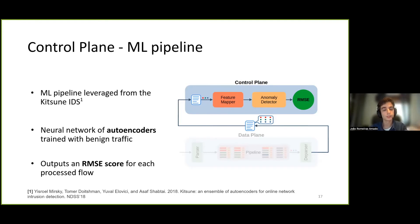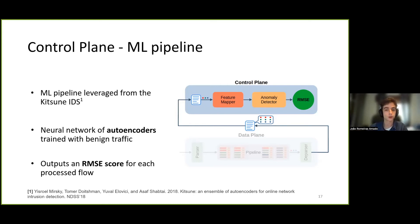The autoencoders receive the traffic measurements and output the final score for each set of measurements, the RMSE score. During the initial training phase of this ML pipeline, which consists only of benign traffic, the highest obtained score is considered a threshold value. During the subsequent execution phase, any packet which obtains a score above that threshold value is considered an anomaly, as it deviates too much from what the classifier considers regular traffic behavior.